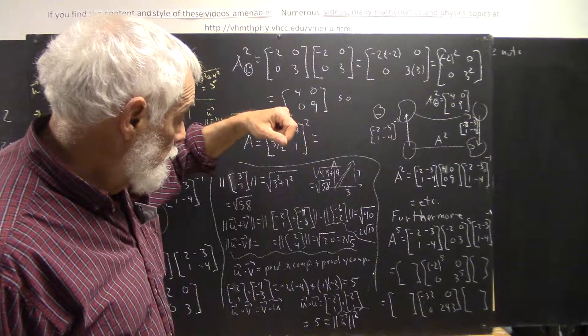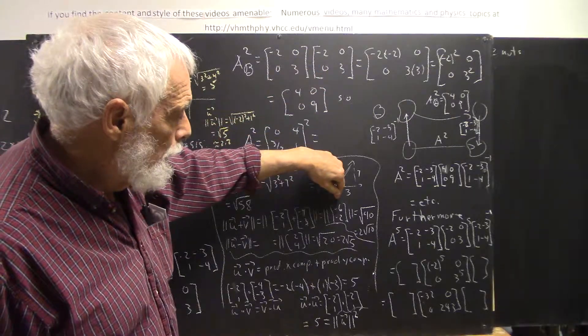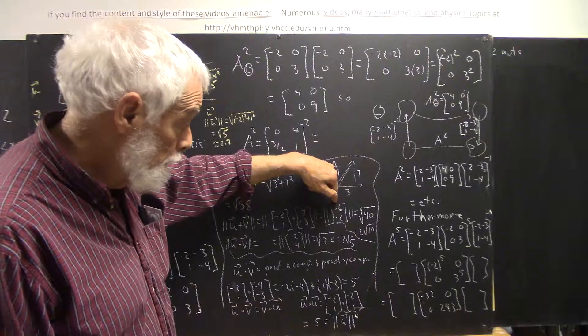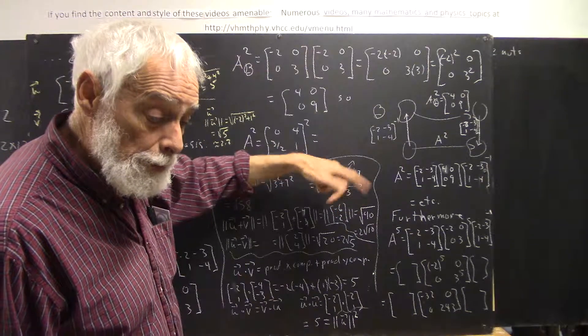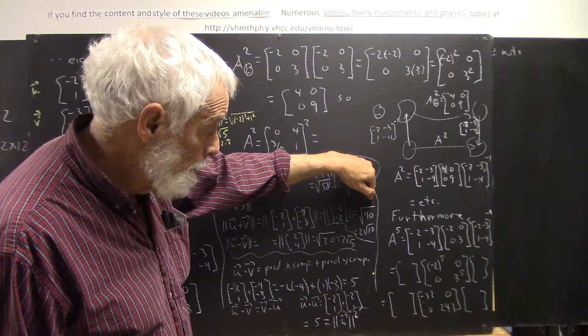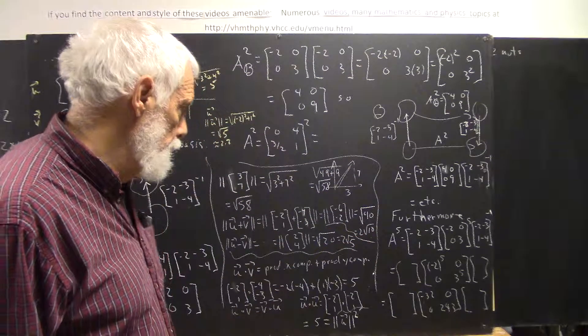So we get (-6, -2), yeah that's right. And the magnitude of that is square root of (-6) squared, which is 36, and (-2) squared, which is 4. 36 and 4 makes 40, and it'll be the square root of that. And of course we put that in more standard form as 2 times the square root of 10.